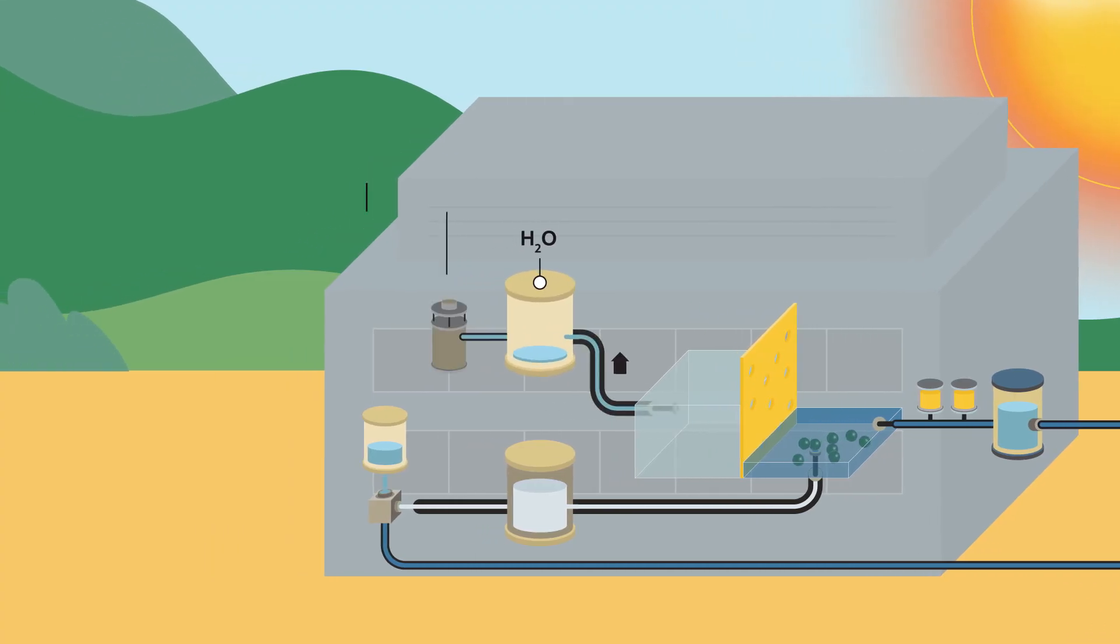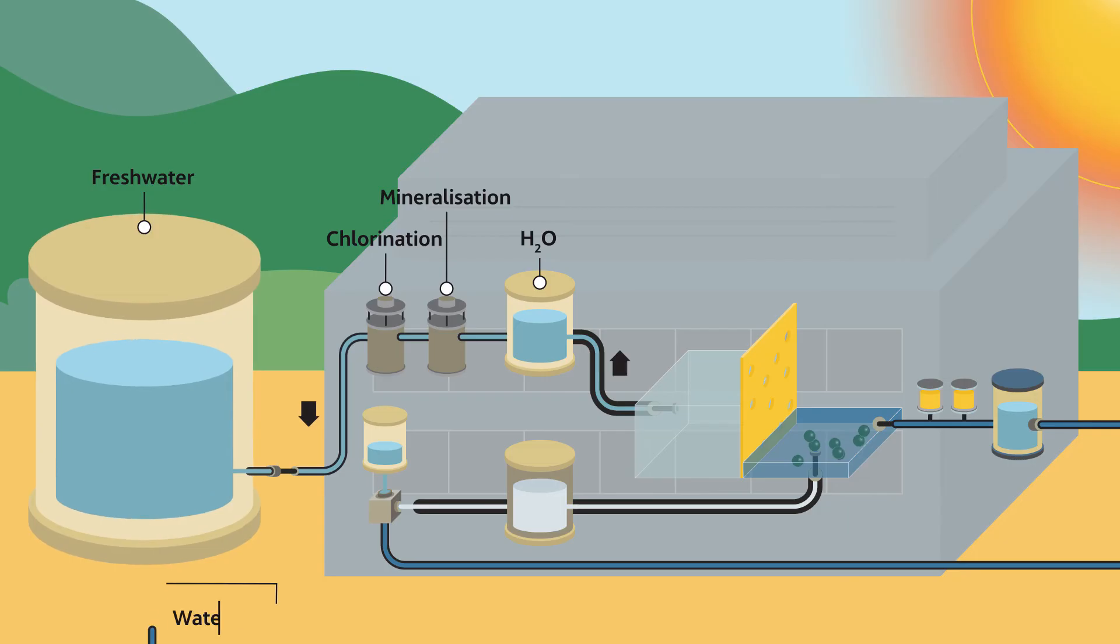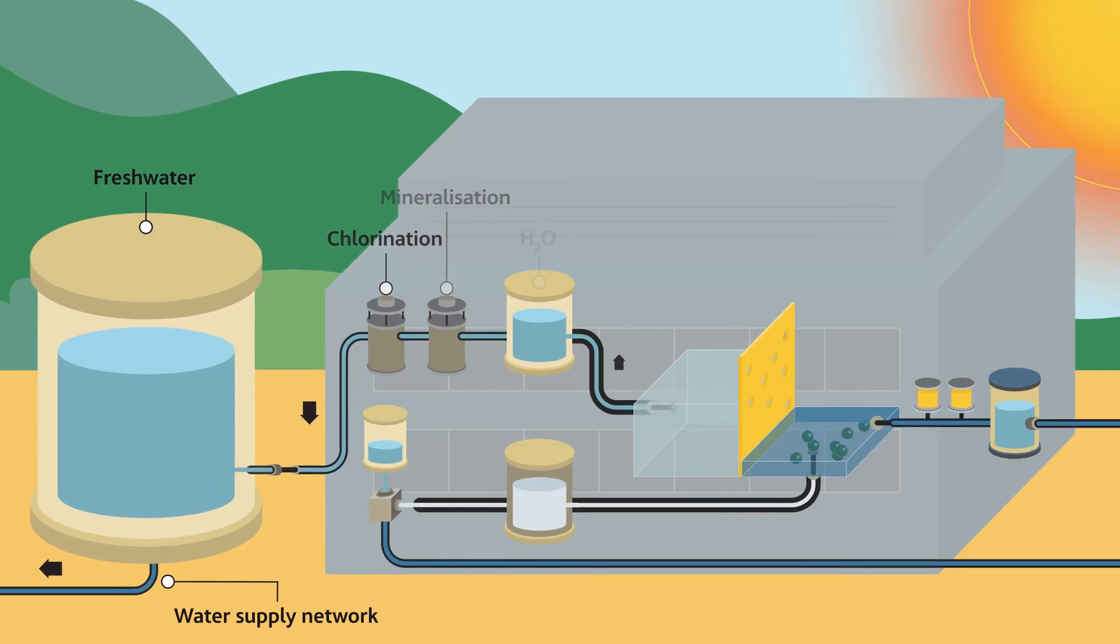The fresh water passes through a remineralization and chlorination process, after which it is stored in tanks and then sent to the distribution network for consumption.